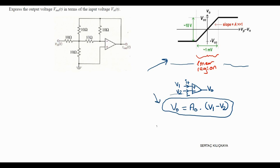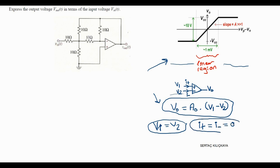An ideal op amp has infinite loop gain A0 and infinite input resistance. On the other hand, it has zero output resistance. Hence, the input voltage and currents are constrained as V1 equals V2 for an ideal op amp, and the currents I plus and I minus should be equal to zero. Those two equations hold for an ideal op amp.